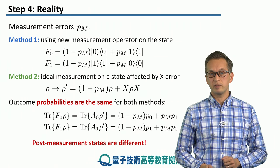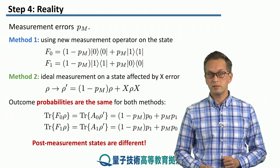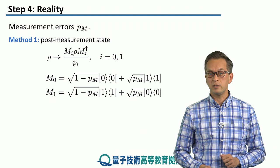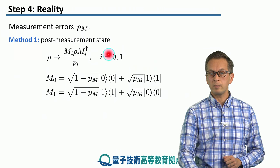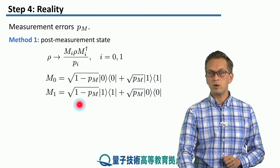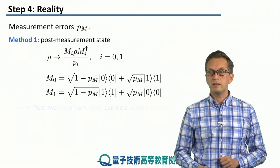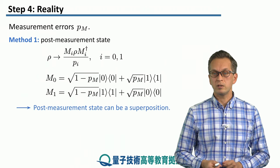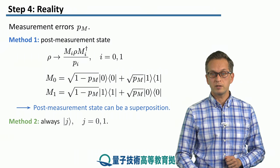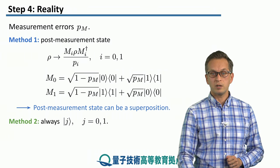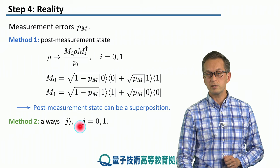Now, what are the post-measurement states for these two different methods? And this is where these methods diverge. Method one will give you applying the following measurement operators. And these methods can actually result in a superposition of 0 and 1. While the second method always results in a single ket 0 or a single ket 1.